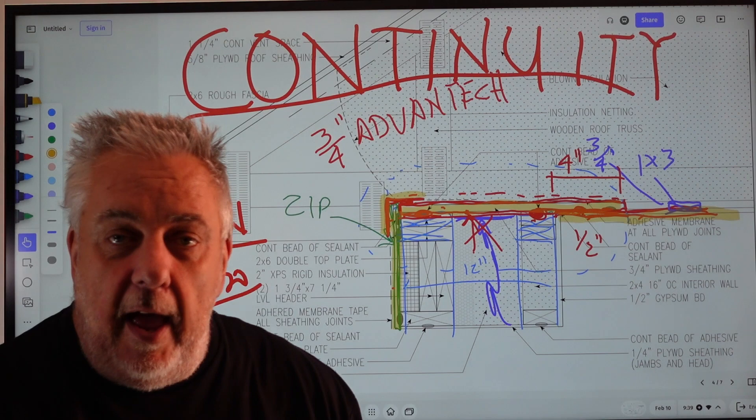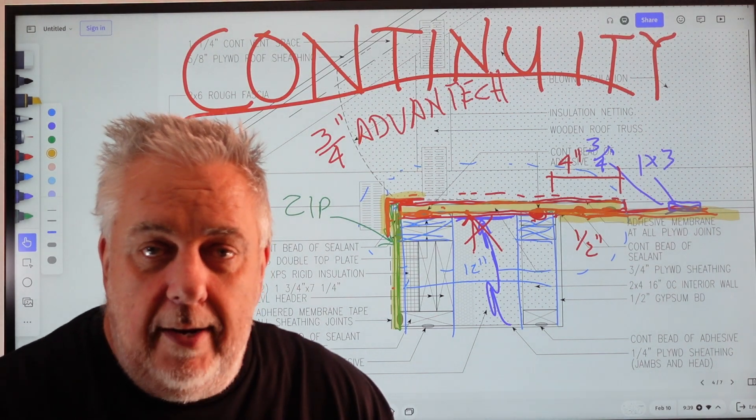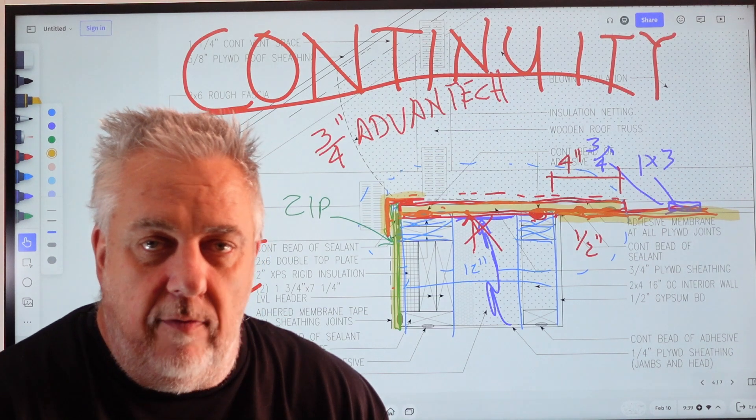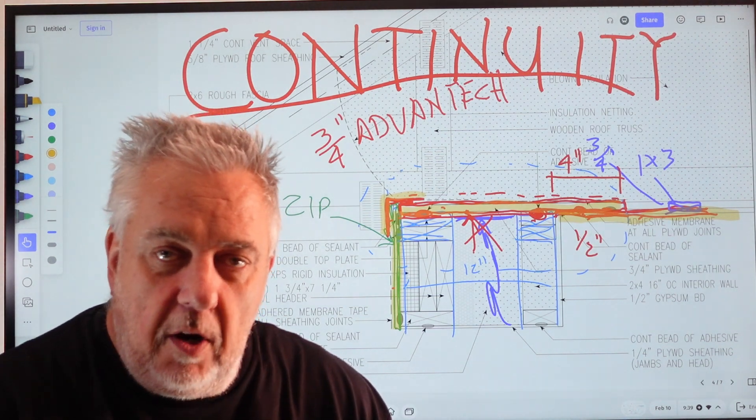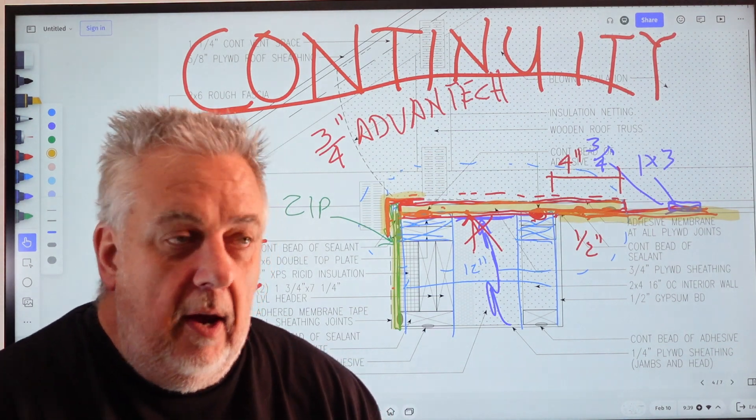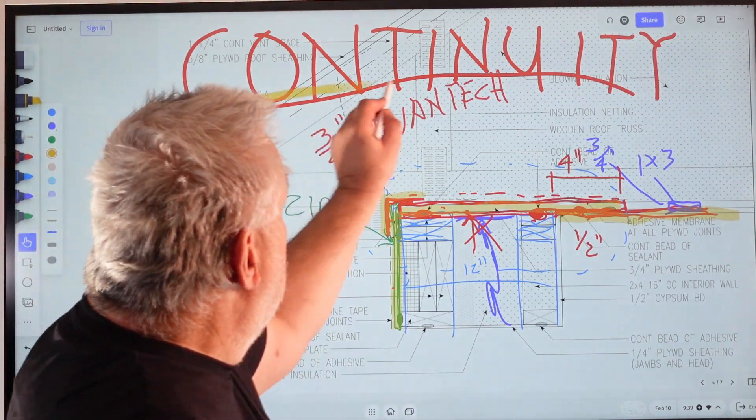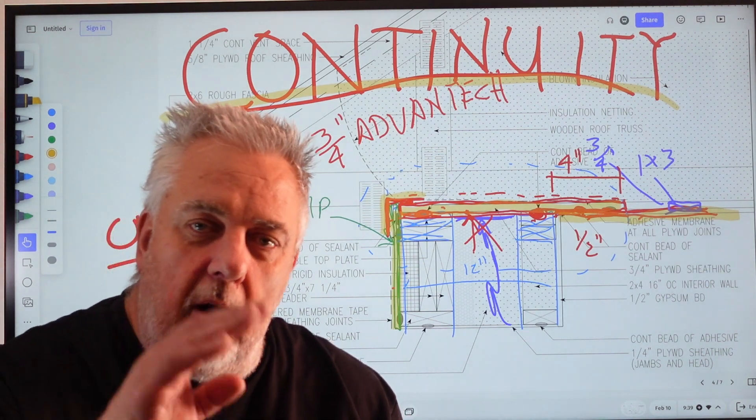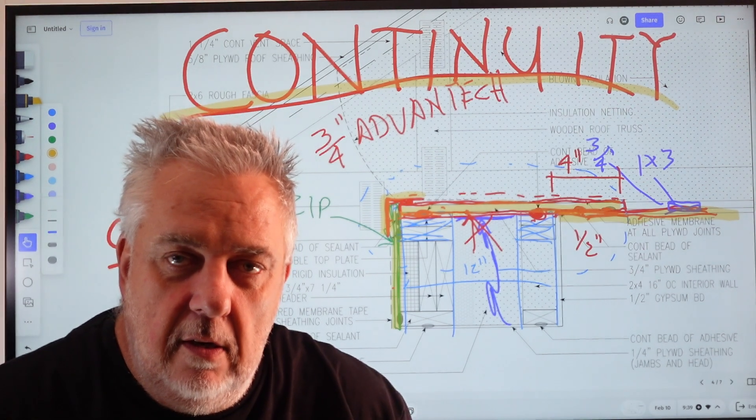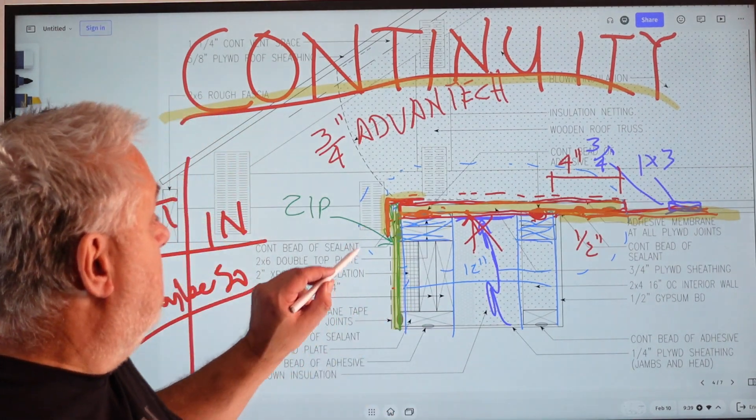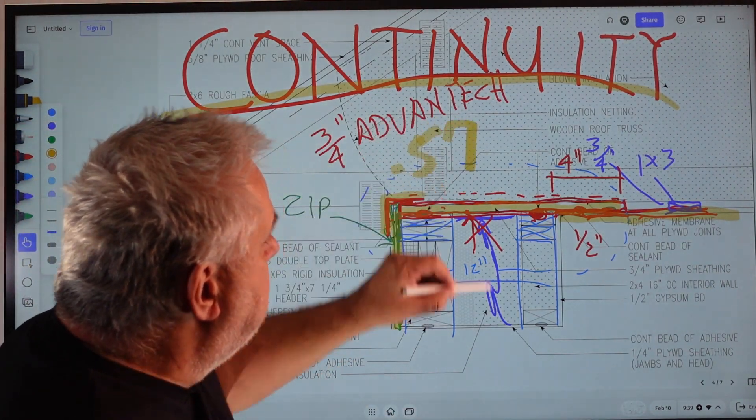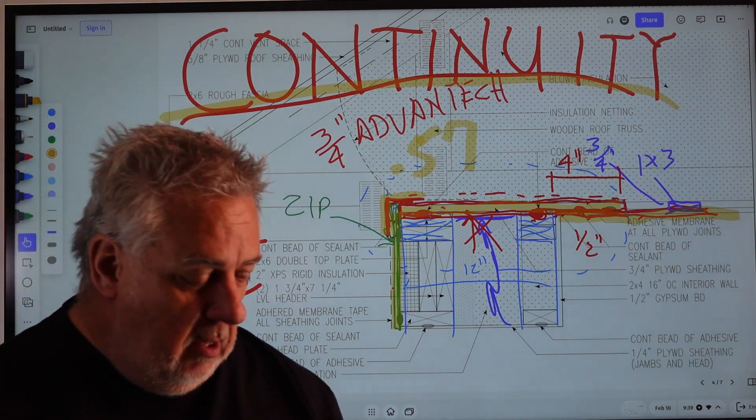That is Joe's red line test coming to you live. All the different components connect, they maintain continuity across that detail, and they put our house in a position for success. The success in such that we hit .57 on our air tightness.